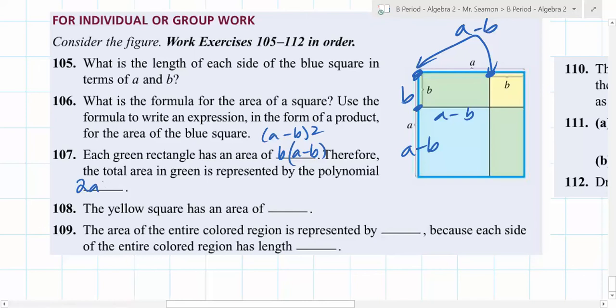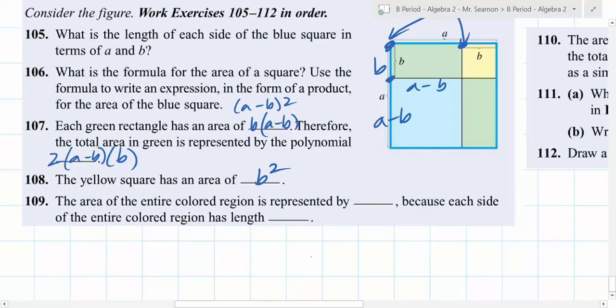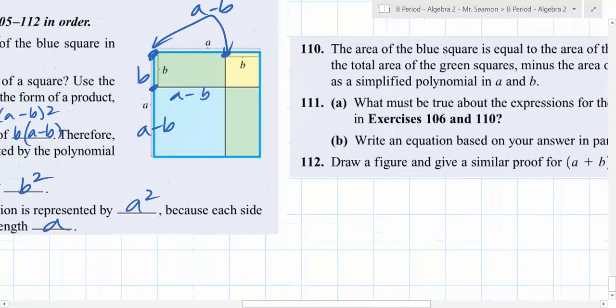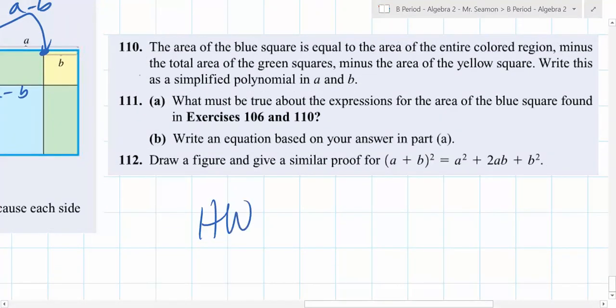2 times A. 2 times A. Well, it's two of them, right? 2 times A minus B times B. Yeah. Oh, yeah. Okay, you have to put the B on the other side. That's fine. That's fine. Yeah, there's two of them. That's fine. Sure. Could you multiply that out if you wanted to? Yeah. Sure. Don't have to. The yellow square has an area of what? What? B squared. The area of the entire colored region is represented by... By what? A squared. A squared. Because each side of the entire colored region has a length of... A. A. That's correct. Okay, so your homework. Check these over and do the other one.